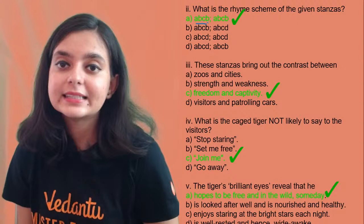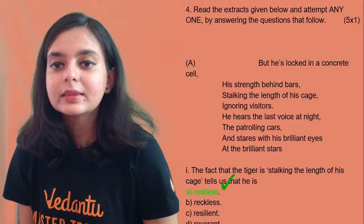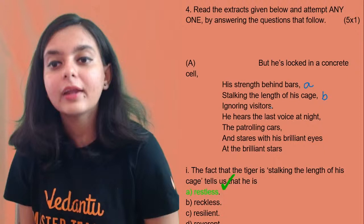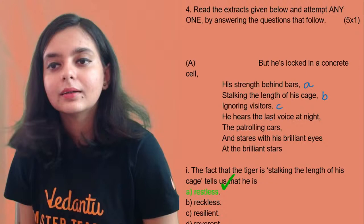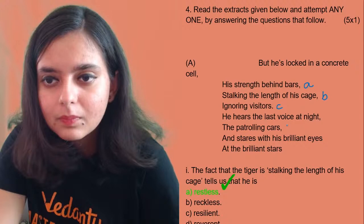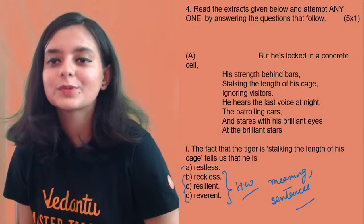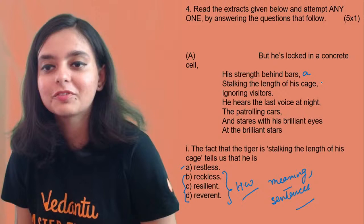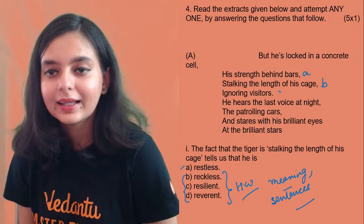Dia is saying A. Let's have a look at the answers. The rhyme scheme is ABCB. Let me go back to the stanza — 'his strength behind bars' — let's take it as A; 'stalking the length of his cage' as B; 'ignoring visitors' as C — and again ABCB.